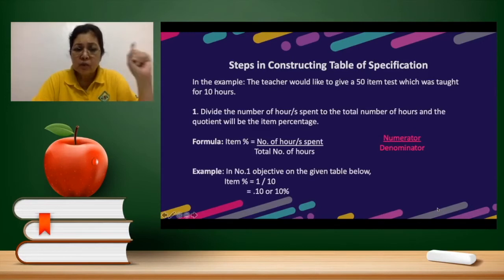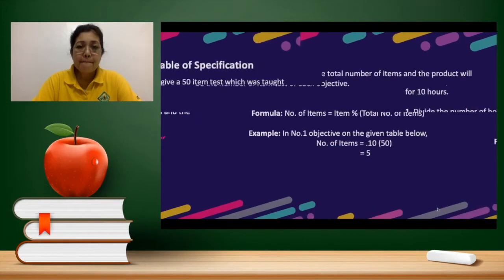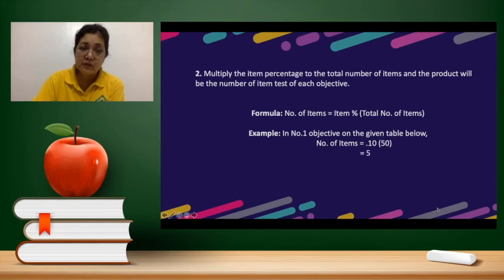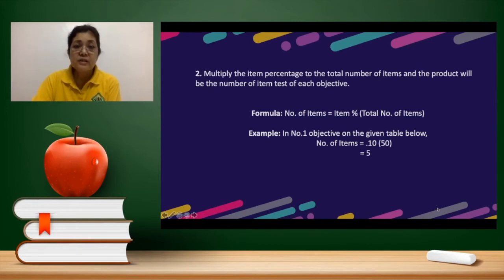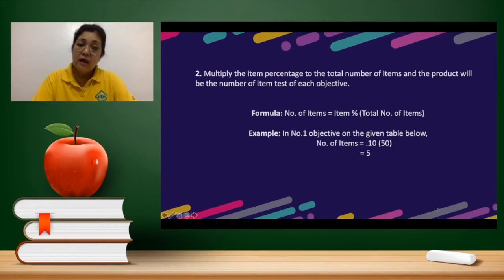For objective number one, the number of hours is 1 and the total number of hours is 10. So you divide 1 by 10, which gives you 0.10 — that is 10 percent. Then, you multiply the item percentage by the total number of items to get the number of items for each objective. So 10 percent, or 0.10, multiplied by 50 — the desired number of items — gives you 5 items for that objective.